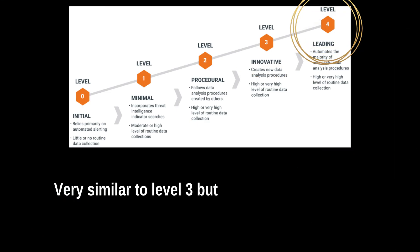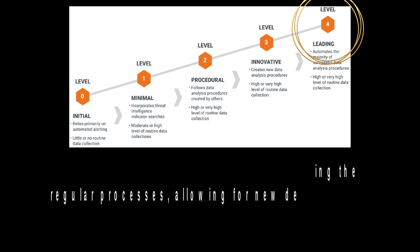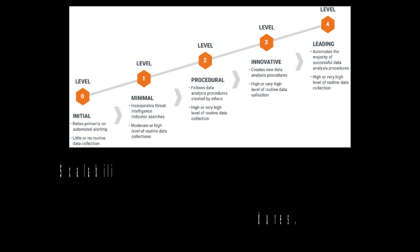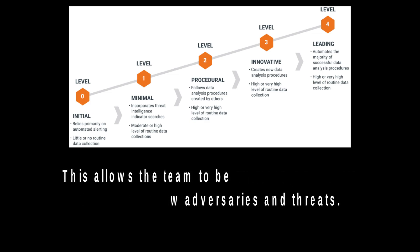The highest level of the hunting maturity model is level four, which is leading. This is essentially the same as level three, except it includes automation. As mentioned, there's a scalability issue with level three where the progress of the organization can cause a continuous increase in procedures and processes. The consistent and routine processes that are done frequently will be streamlined with automation, allowing for new threat hunting processes to be developed to improve the detection program as a whole, making the team quite effective at taking on adversaries and potential threats.